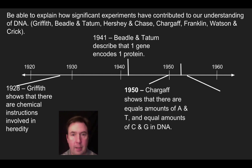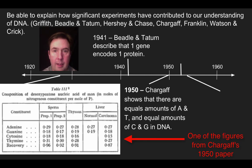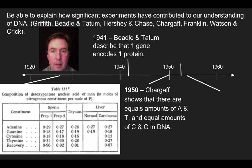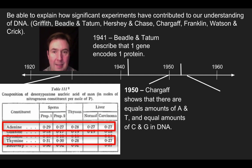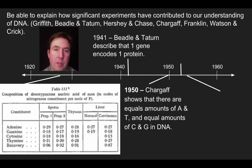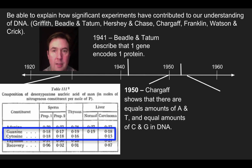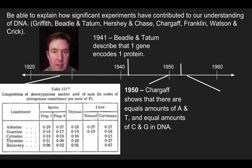Another key piece of information was the work of Chargaff, who you may know from Chargaff's rules. Chargaff compared the components of DNA found in different organisms and found a conserved ratio: even though different organisms had different amounts of the bases making up DNA, there was consistently the same amount of adenines and thymines (A's and T's), and equal numbers of cytosines and guanines (C's and G's), no matter what organism he examined. Chargaff's rule: the ratio of A to T is always equal, and C to G is always equal.